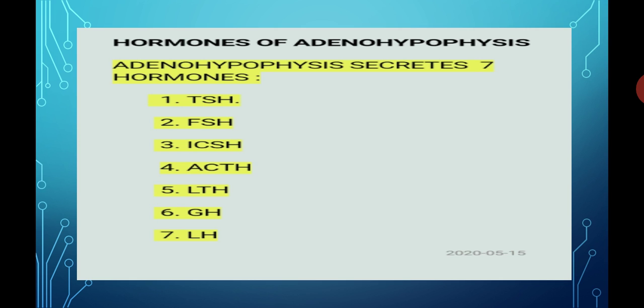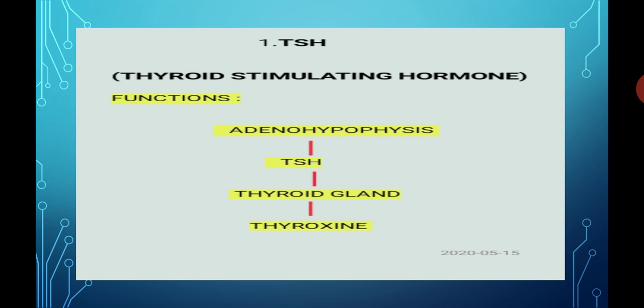We start with our first hormone, that is TSH. The full form of TSH is Thyroid Stimulating Hormone — T stands for thyroid, S stands for stimulating, and H stands for hormone. TSH is secreted by the adenohypophysis and discharged into the bloodstream. Blood carries TSH towards its target organ, that is the thyroid gland.